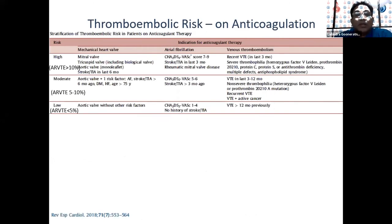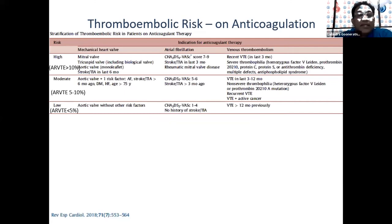How do we assess thromboembolic risk on anticoagulation? This risk assessment covers mechanical heart valves, atrial fibrillation, and venous thromboembolism, stratified as high, moderate, and low risk. For example, a patient with a mitral valve replacement, or a CHADS-VASc score of 7–9 in AF, or a recent VTE within the last three months, would be at high risk. Someone with a CHADS-VASc score of 1–4 and no history of stroke or TIA, or a VTE more than 12 months previously, would be at low risk. This thrombosis risk assessment is very important.